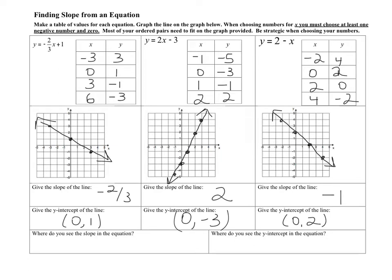So you should have gotten that the slope is negative two-thirds. You could have gotten the slope by calculating rise over the run, or by subtracting the y's and x's for any two points. Here you should have gotten 2 and negative 1 for the other ones. The y-intercept — quick reminder — is the place where the line hits the y-axis. So that's the ordered pair (0, 1). It's also the value where x is equal to 0. Here my y-intercept is (0, negative 3), and here I got (0, 2).